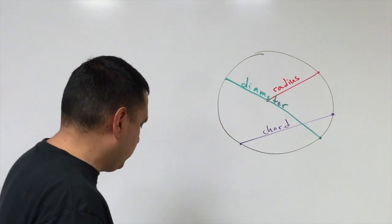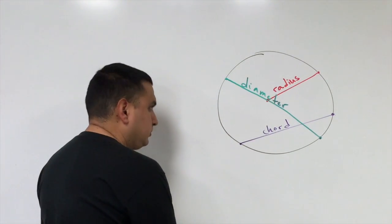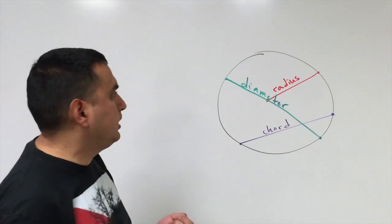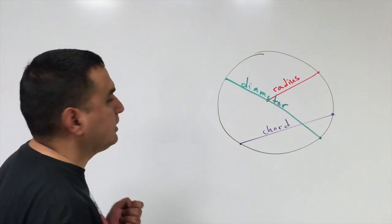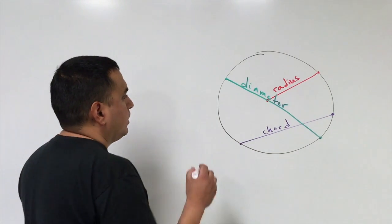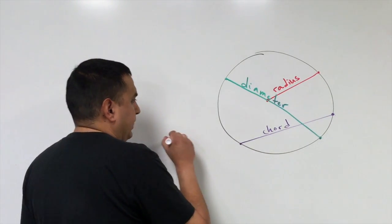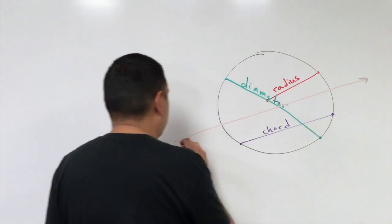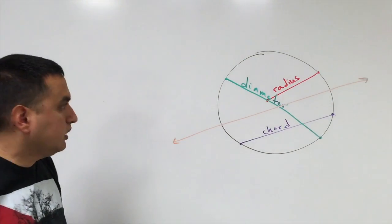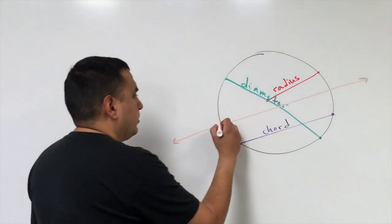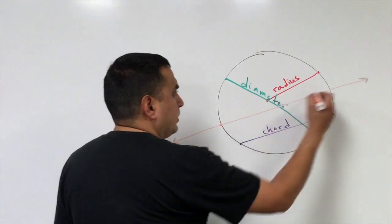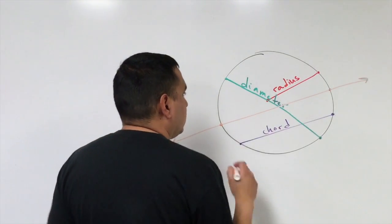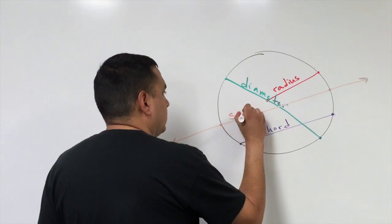The next one is called the secant. The secant goes through the circle — it has points that are on the circle, but it goes out beyond that. So that one's called the secant.